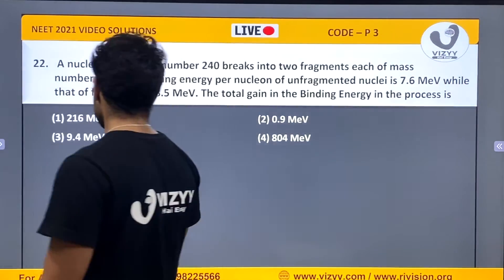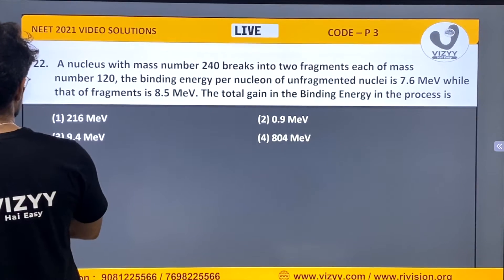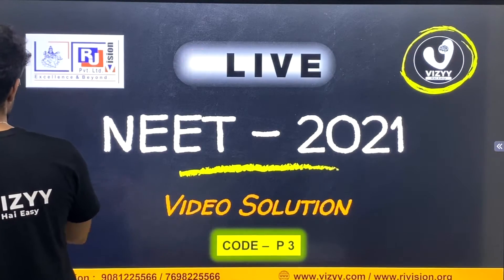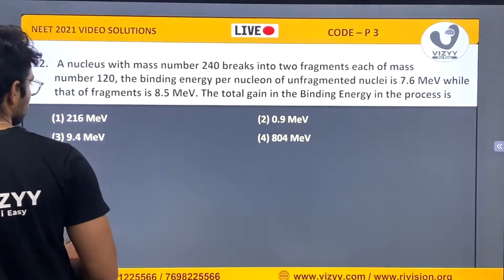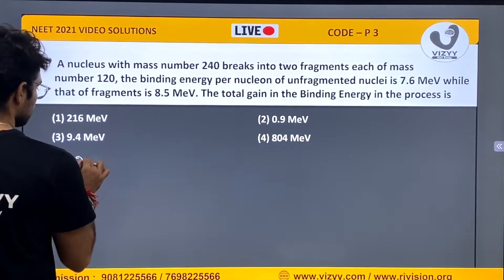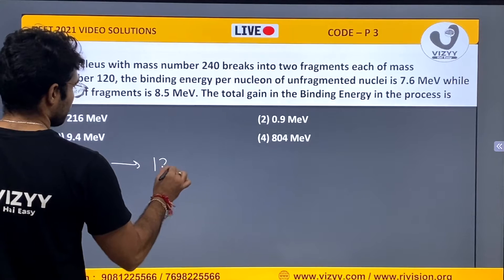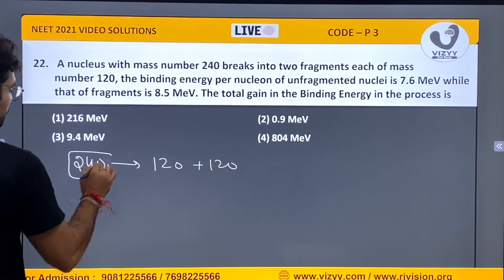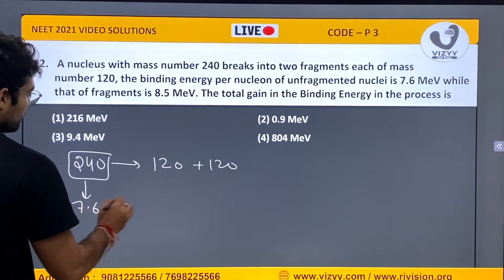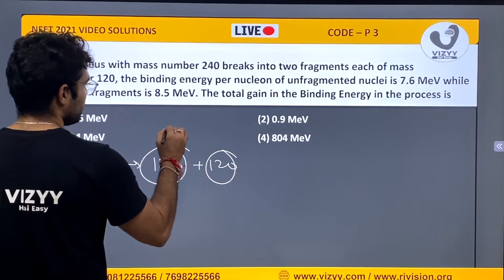Now we have a nucleus at 240. The 240 nucleus is fragmented into 120 plus 120 and the binding energy of this nucleus is given 7.6 and for each nucleus it is given 8.5.